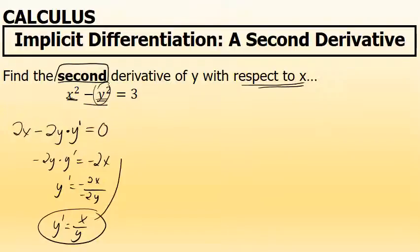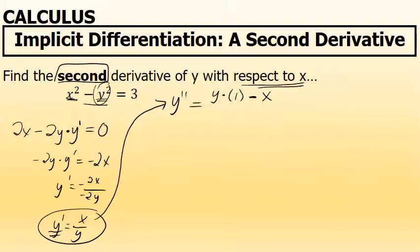Now let's find the second derivative by differentiating x over y. The derivative of y prime is y double prime. Using the quotient rule on x over y: take the denominator unchanged times the derivative of the numerator — the numerator is x, so its derivative is 1 — minus the numerator x times the derivative of the denominator. The derivative of y with respect to x is y prime, all over the denominator squared, which is y squared.